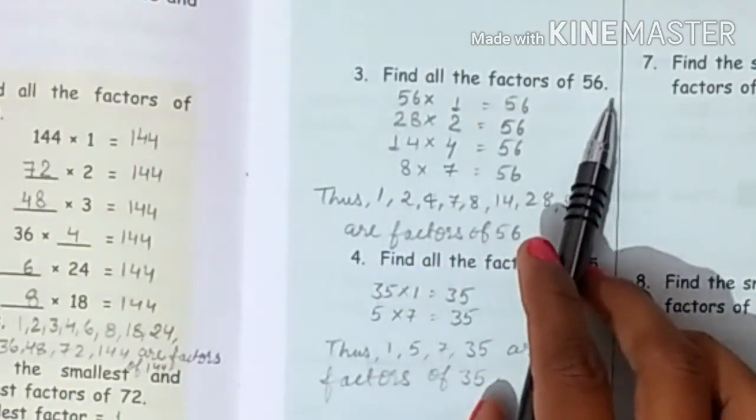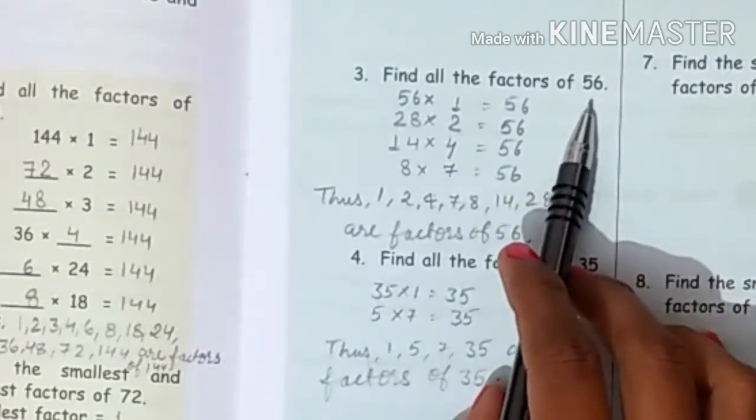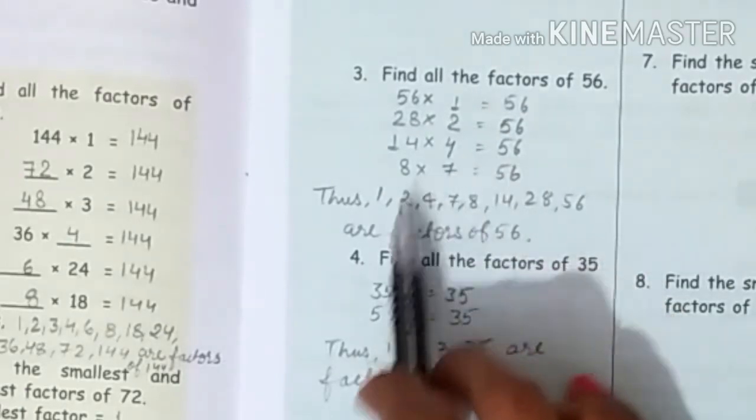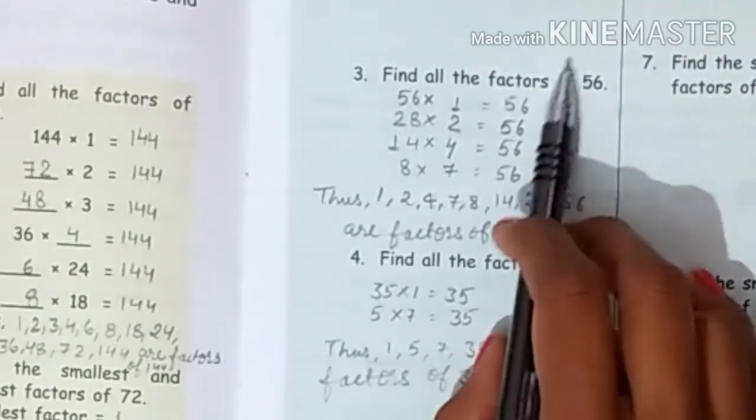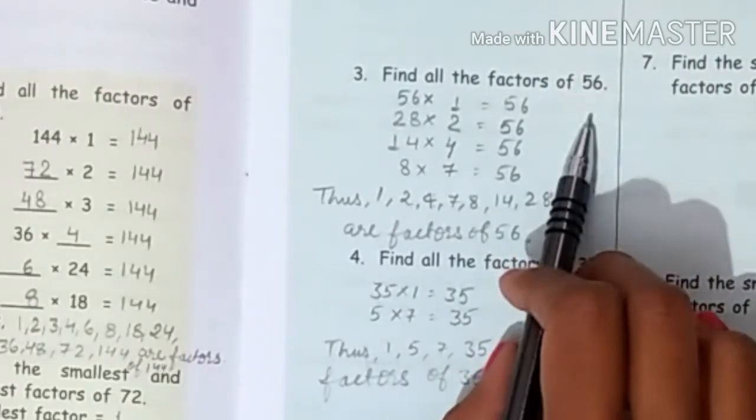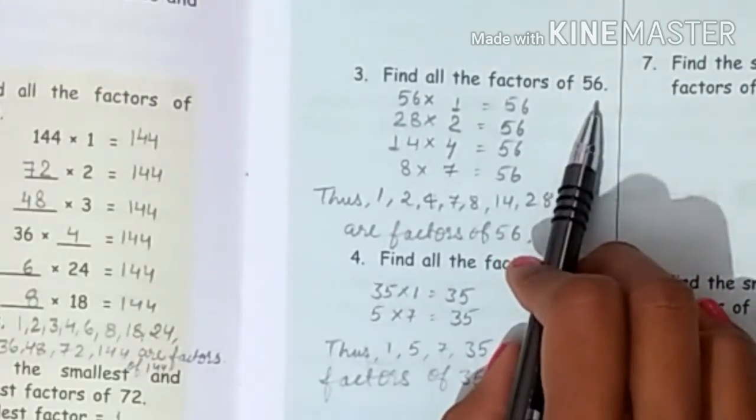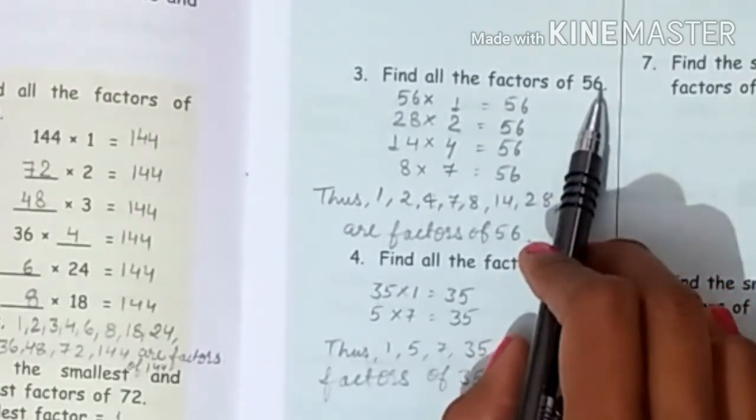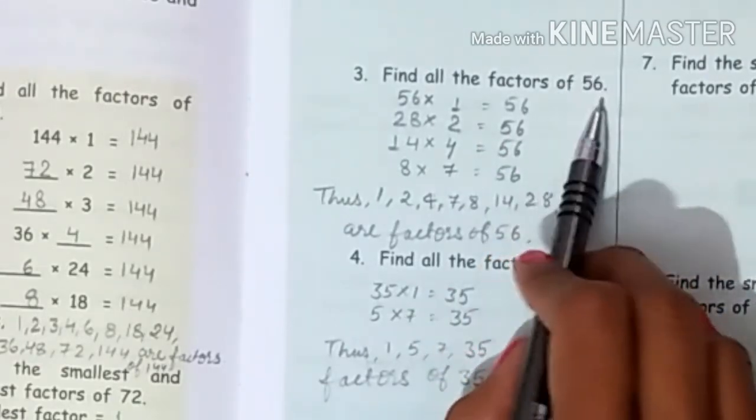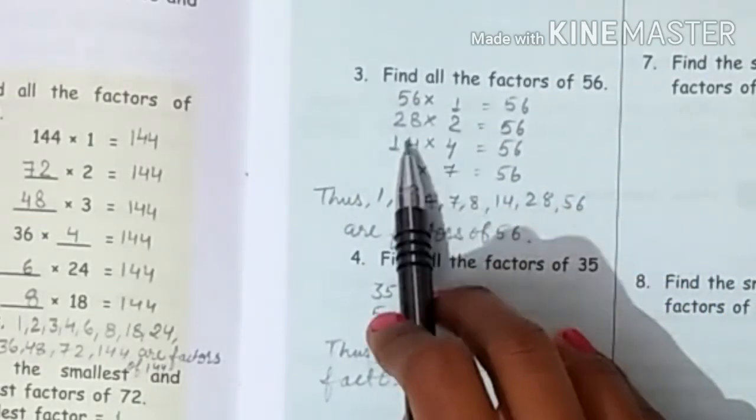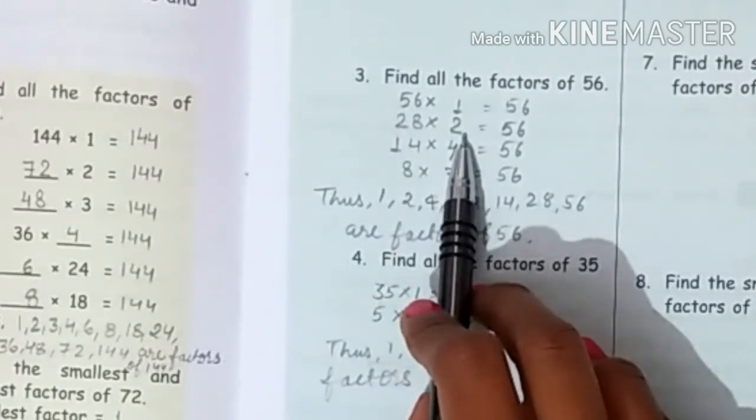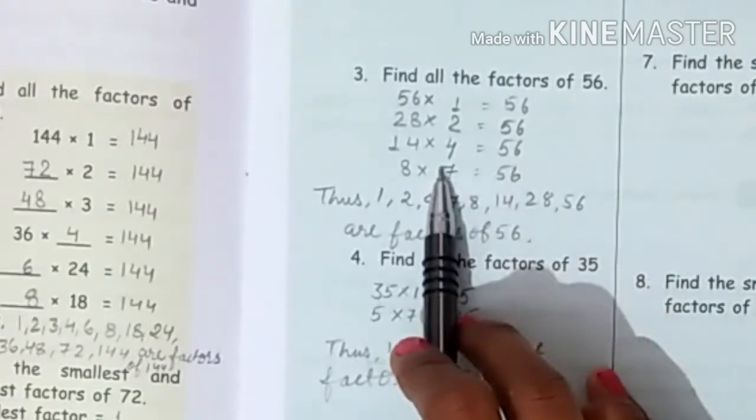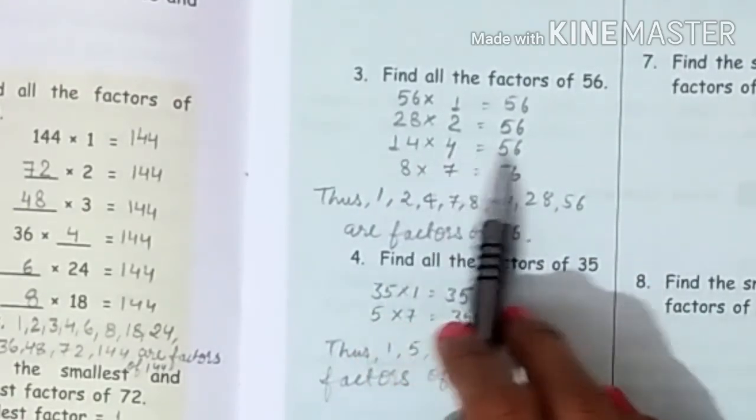Question number 3: Find all the factors of 56. Now, two factors always remember, one and the number itself. It means 1 and 56. Because 56 is even number, so it is divisible by 2. If any number is even, it means that it is divisible by 2.